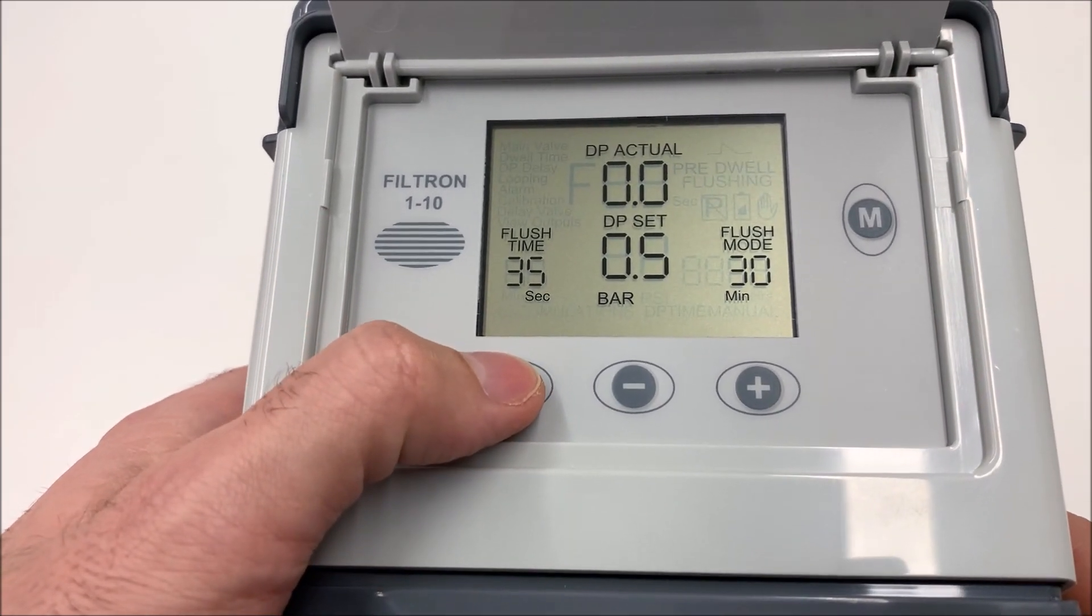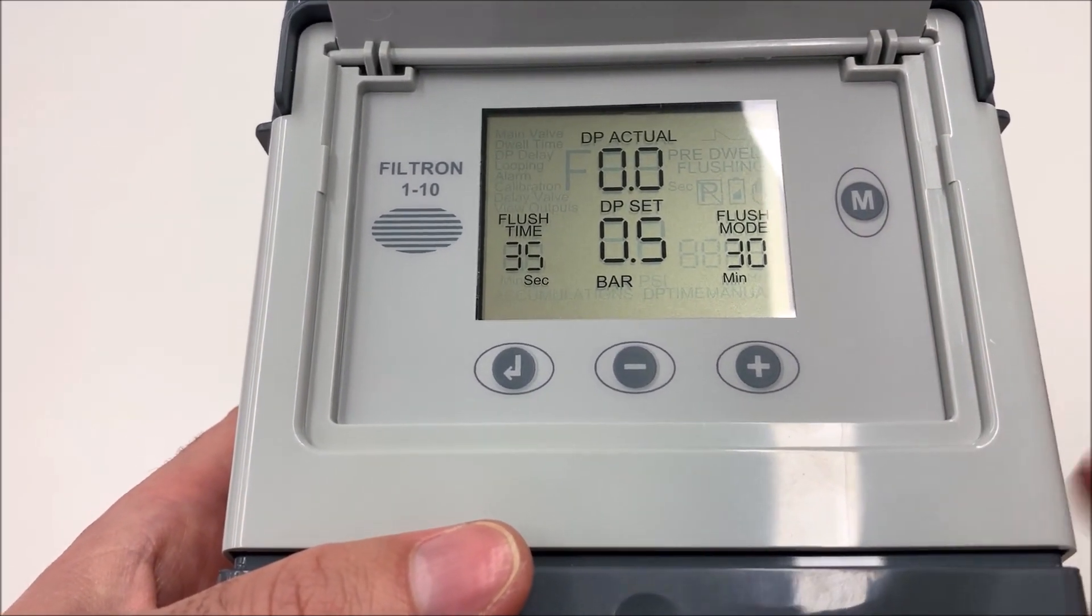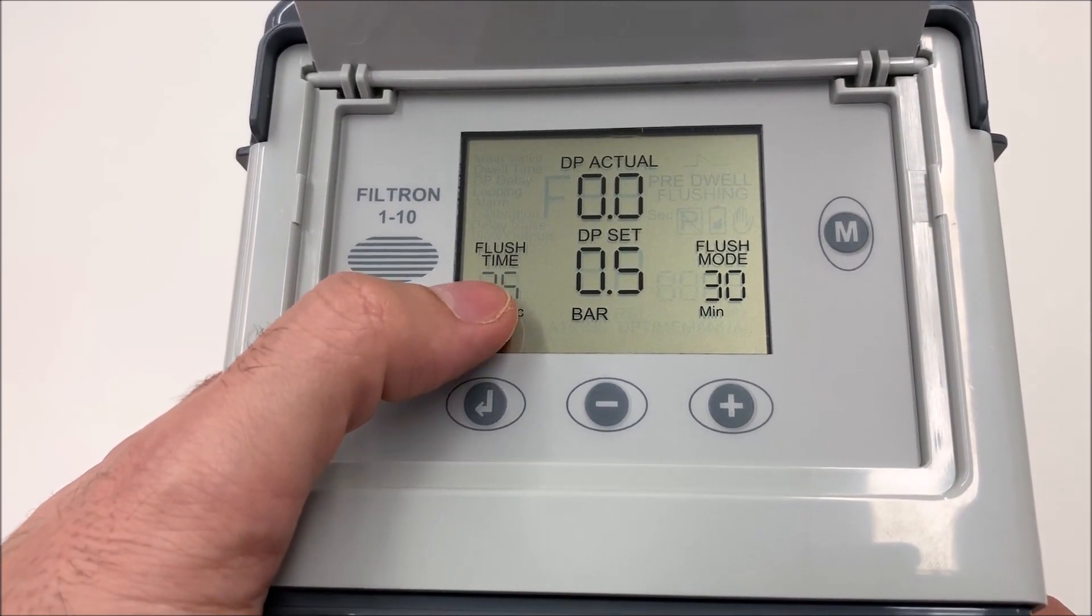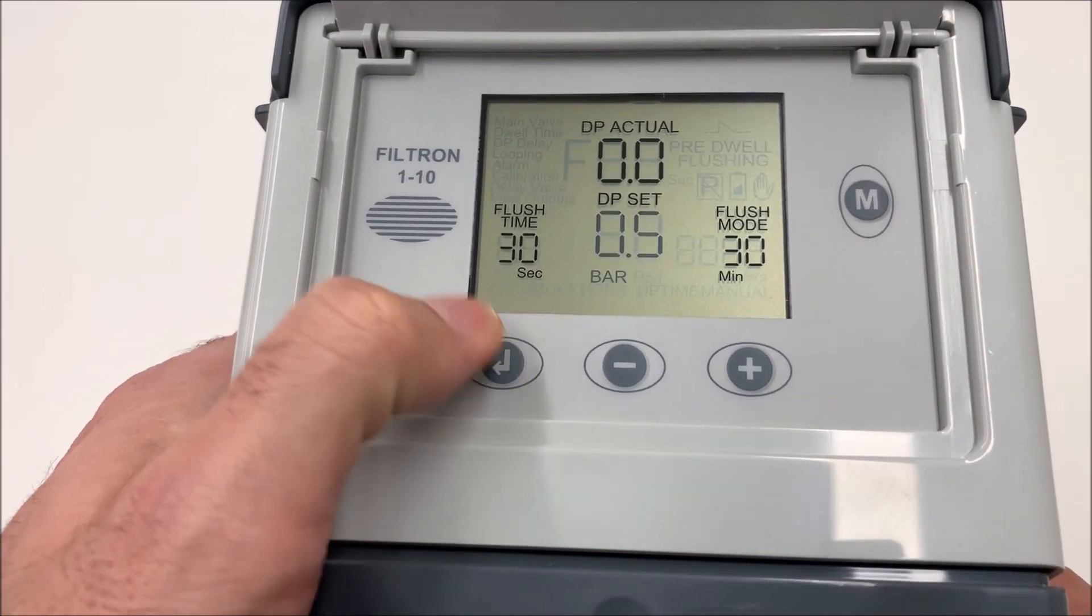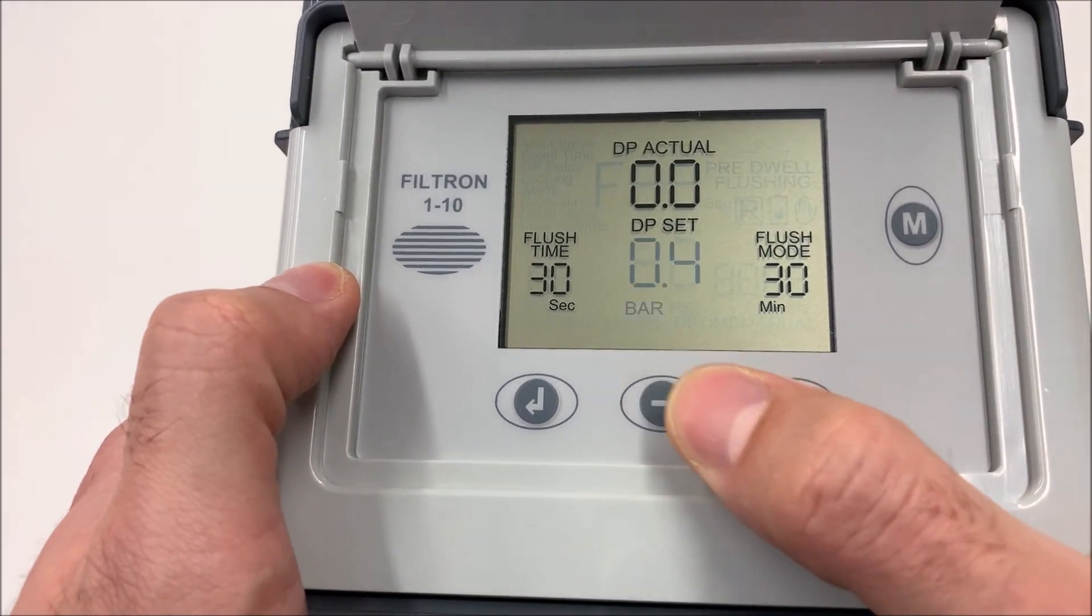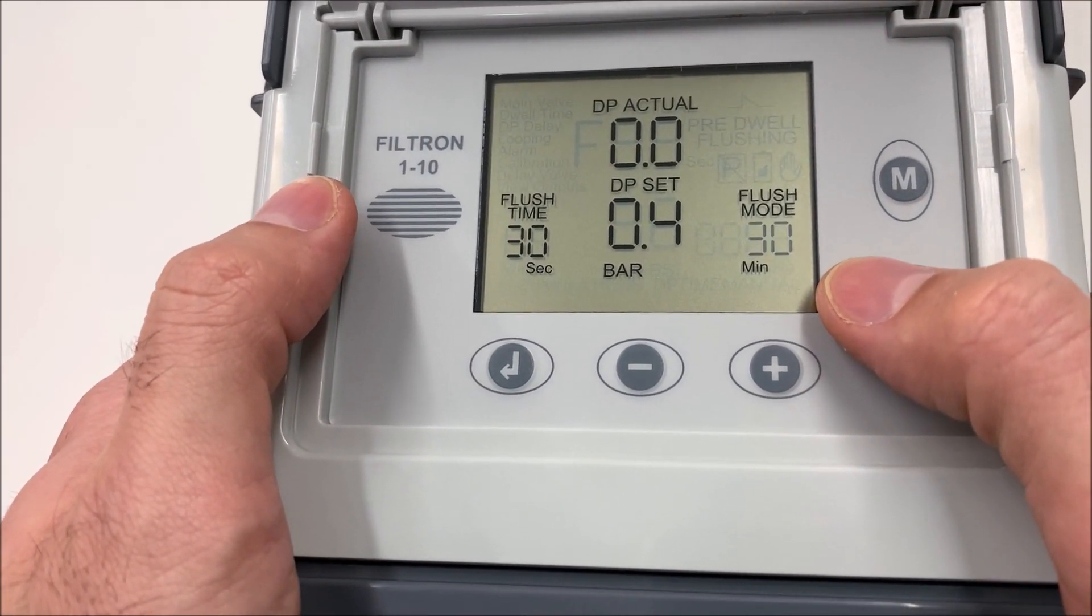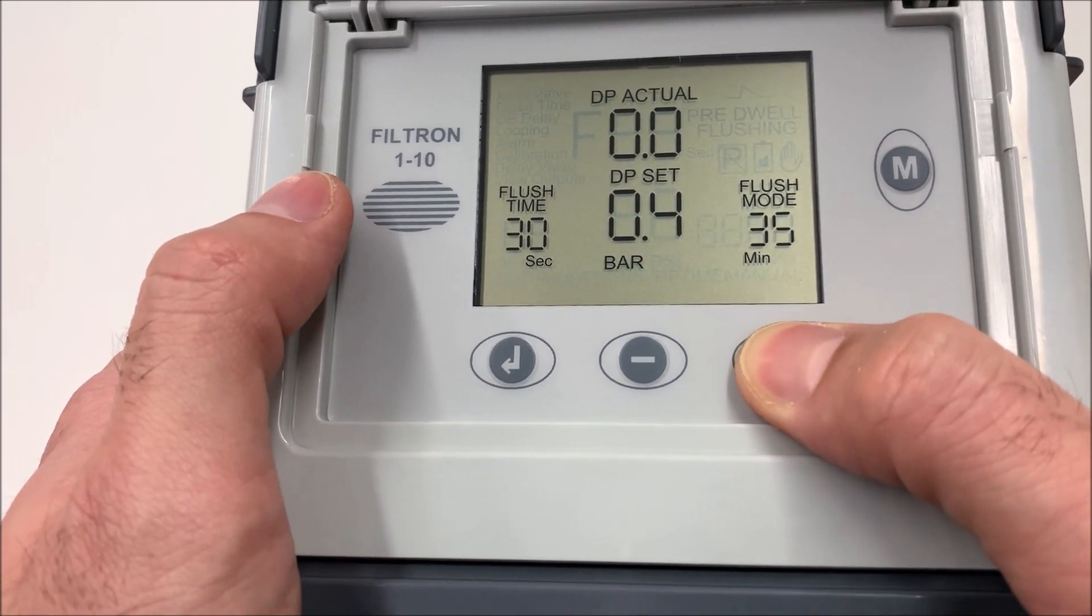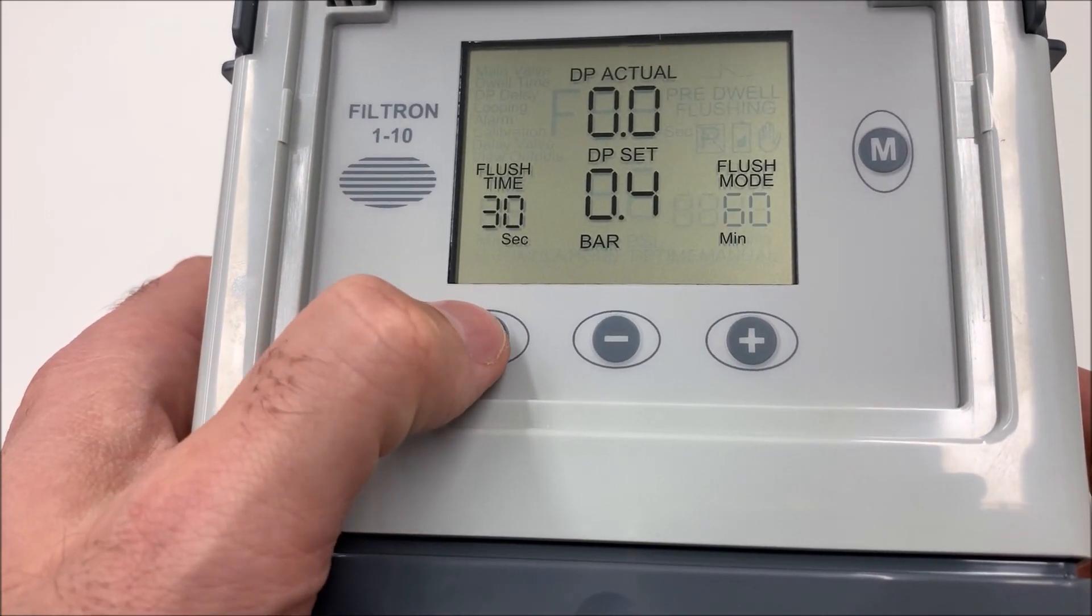The second one is the Enter. If we push the Enter, we will start in the first level of programmation. So let's push it and here we can adapt the flushing time. We can put 30 seconds instead of 35, for example. We can change the preset value for backwash. We can adjust to 0.4, for example. And we can adjust the time in which we want to backflush in case we don't arrive to the DP switch, to the DP value. For example, every hour, we will backwash every hour if we don't arrive to the preset value.